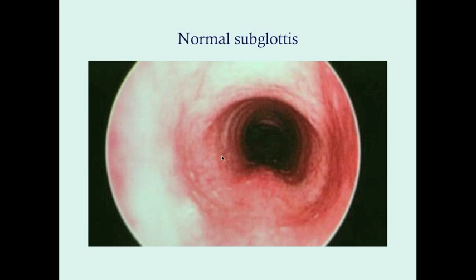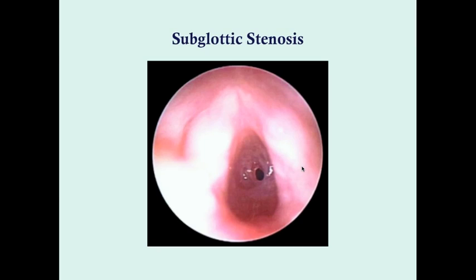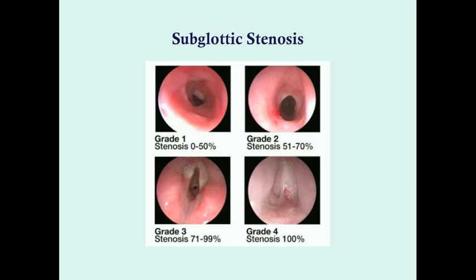Here is a normal subglottis, just below the vocal cords. In contrast, here is a subglottic stenosis — you can see normal caliber on one side and then a stenosed region right at the level of the vocal cords. The grading system: grade 1 is the least severe, with narrowing of 0–50% of the lumen; grade 2 is 51–70% occlusion; grade 3 is 71–99%; and grade 4 is complete stenosis of the lumen.